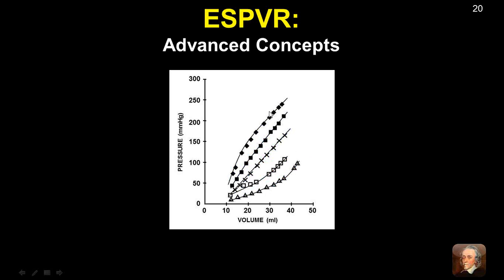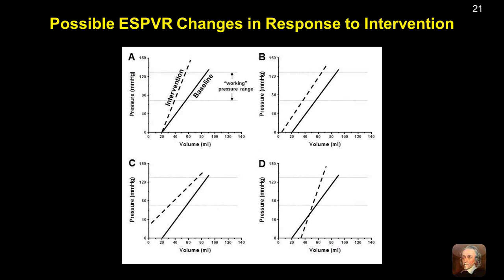Additional curves from the same animal over a broader range of contractility changes show that as inotropic state is changed from normal to either markedly increased or markedly decreased, the end-systolic pressure-volume relationship takes on an increasingly curvilinear shape. In intact animals or patients, we cannot measure the ESPVRs over such broad ranges to define these curves in reality. Therefore, we are stuck with applying linear regression analysis and must be more careful about how we interpret the results.